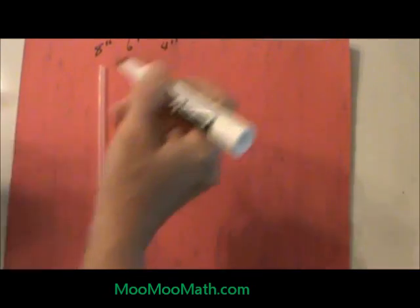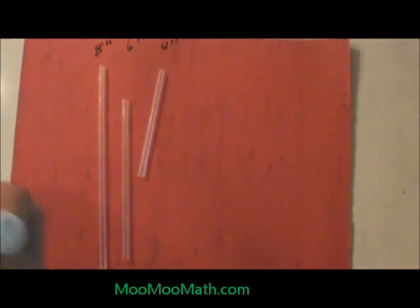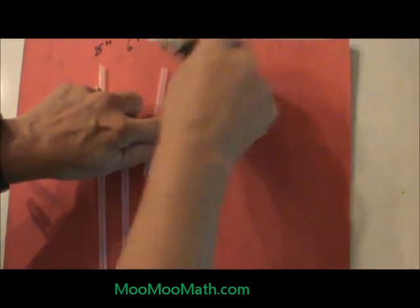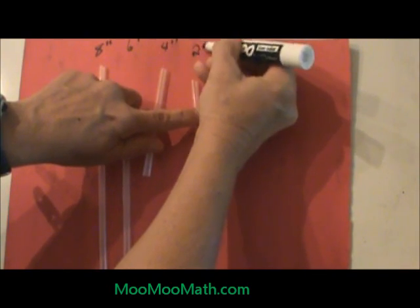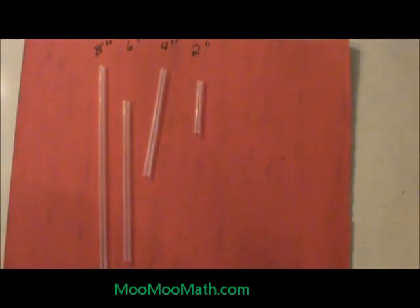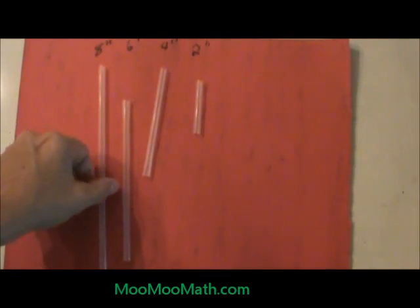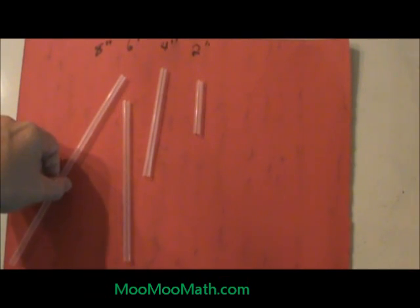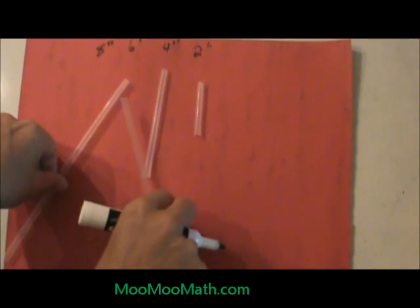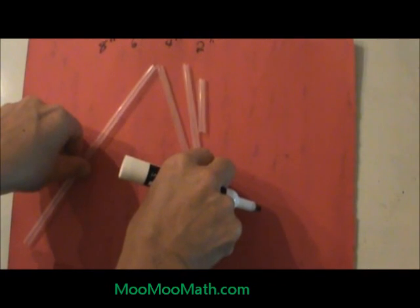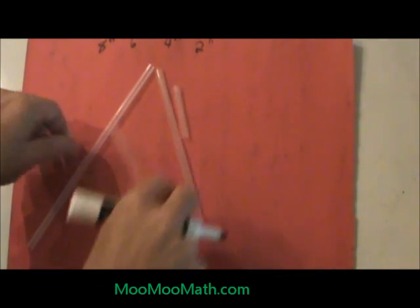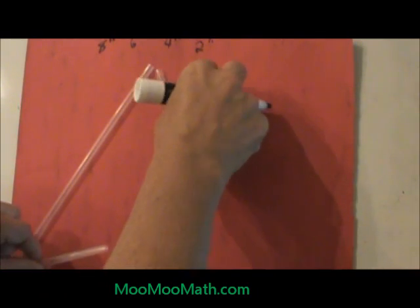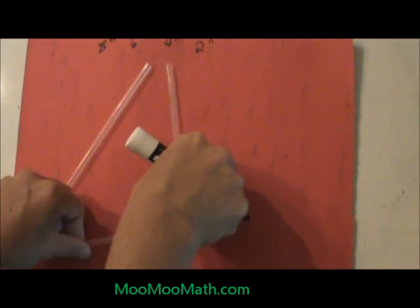I'm going to create those with these straws to show you which make triangles and which ones don't. If I have the side length of 8 and I pair that with a side of 4 and a side of 6, those 3 pieces can create a triangle.